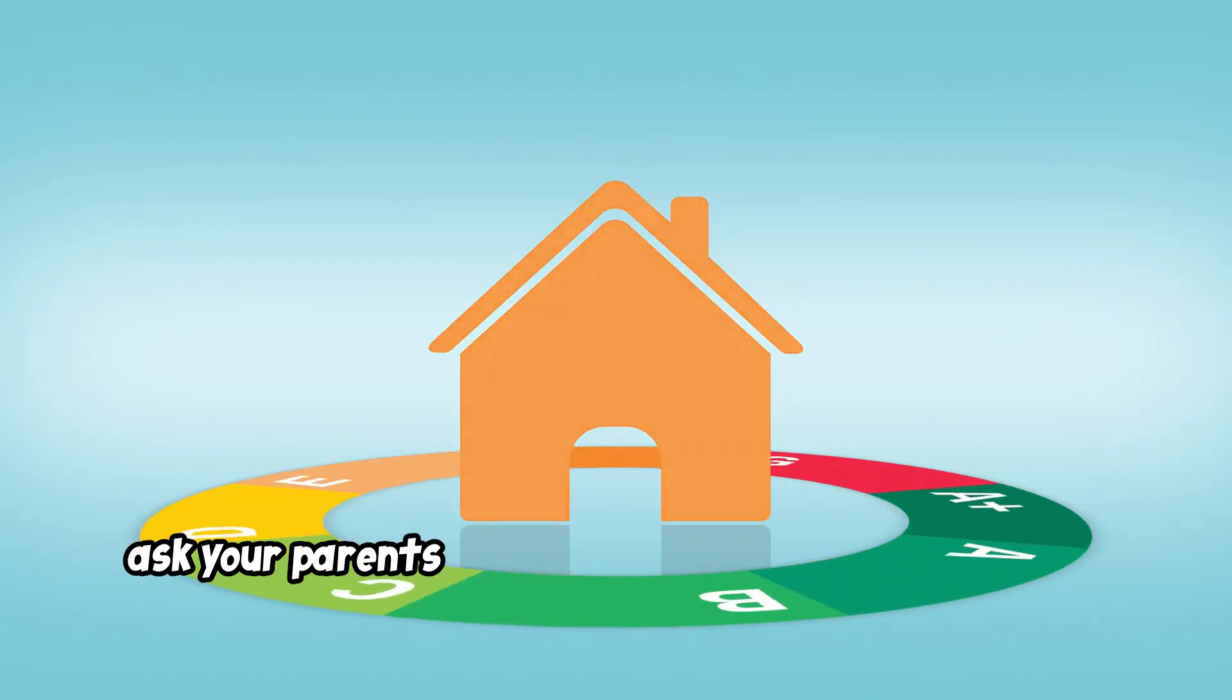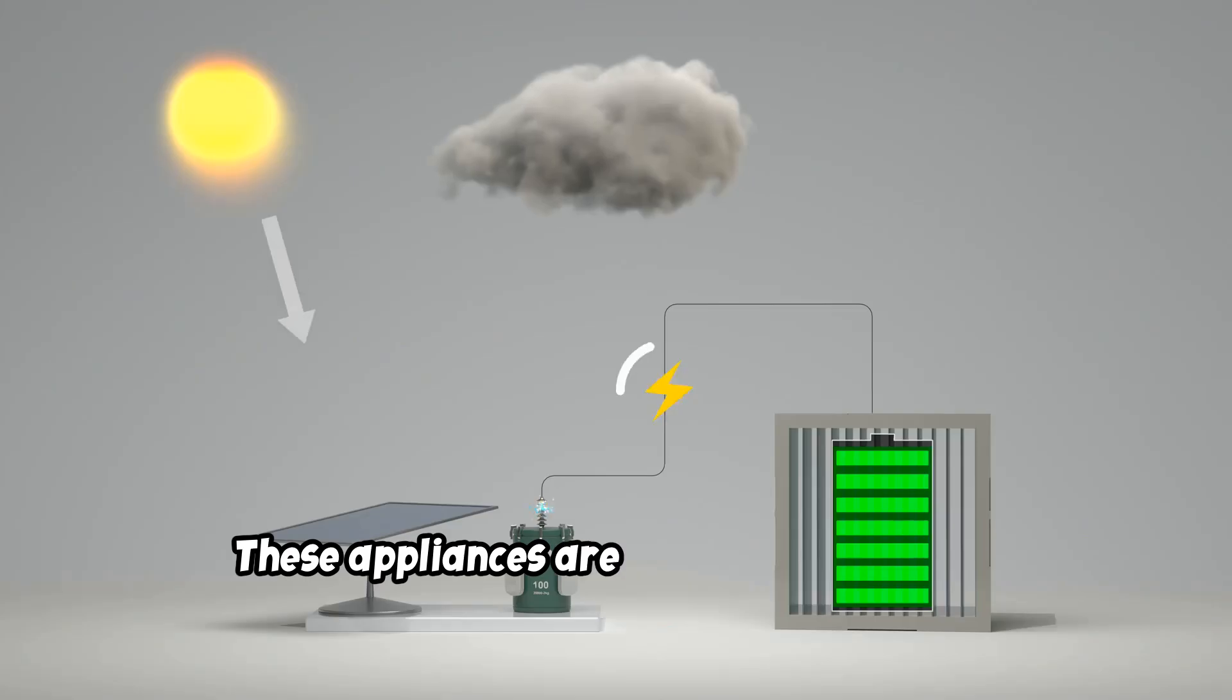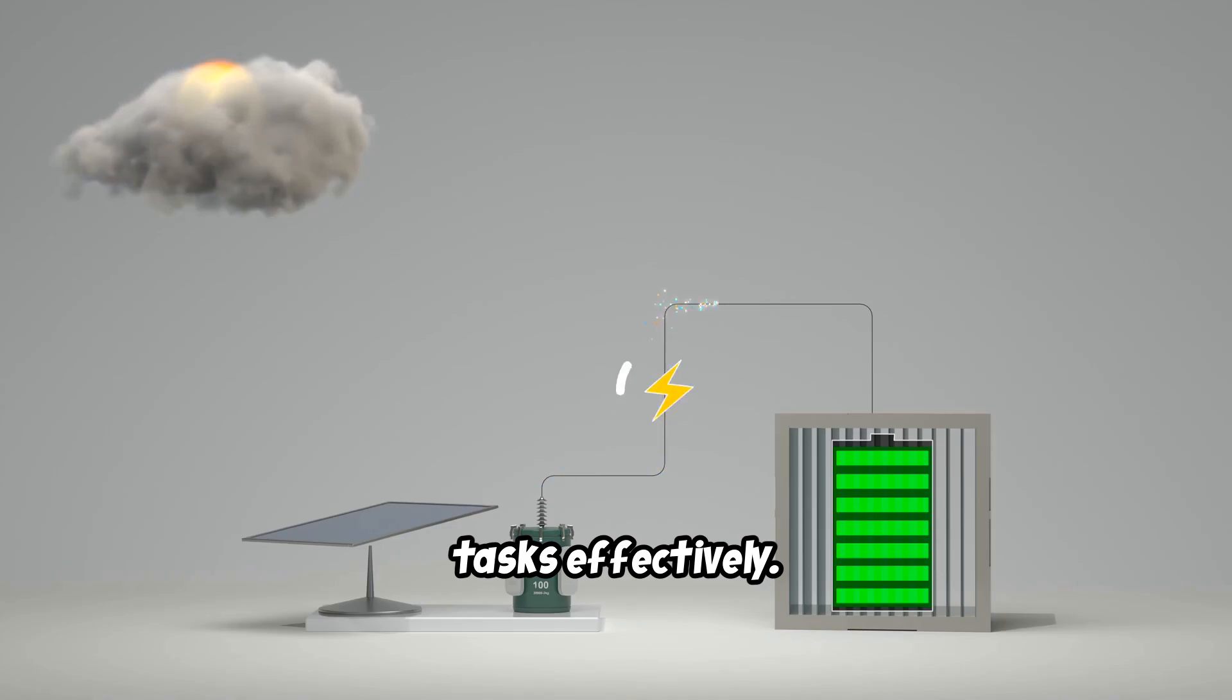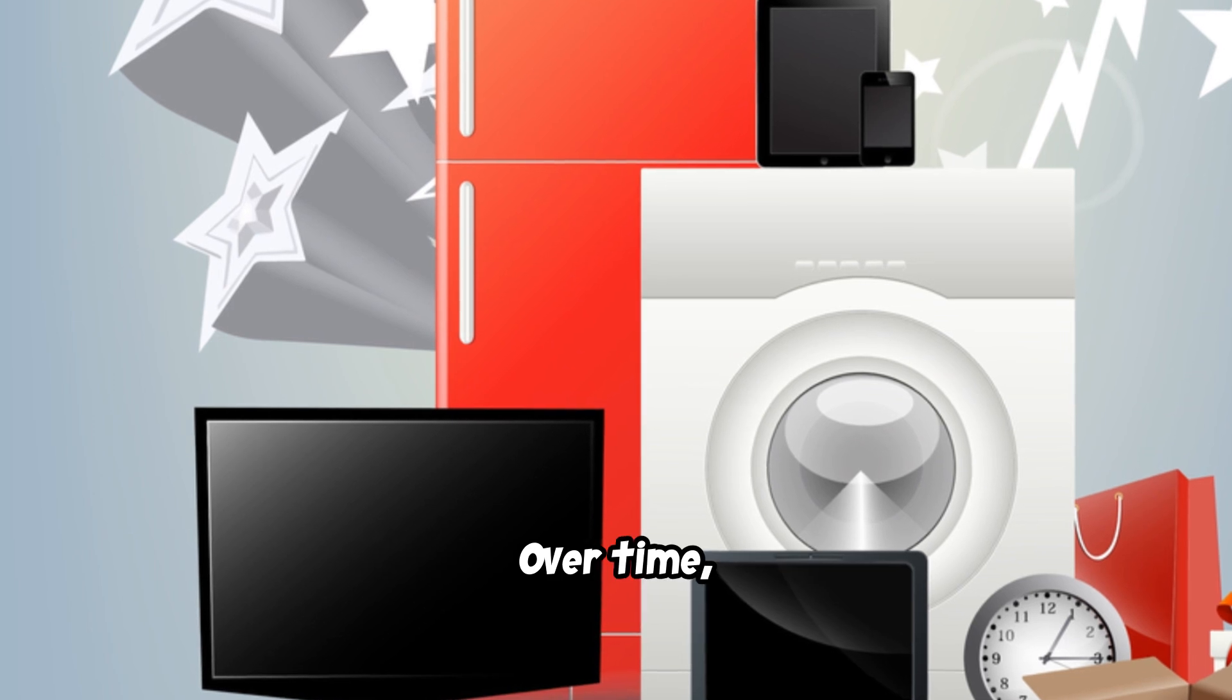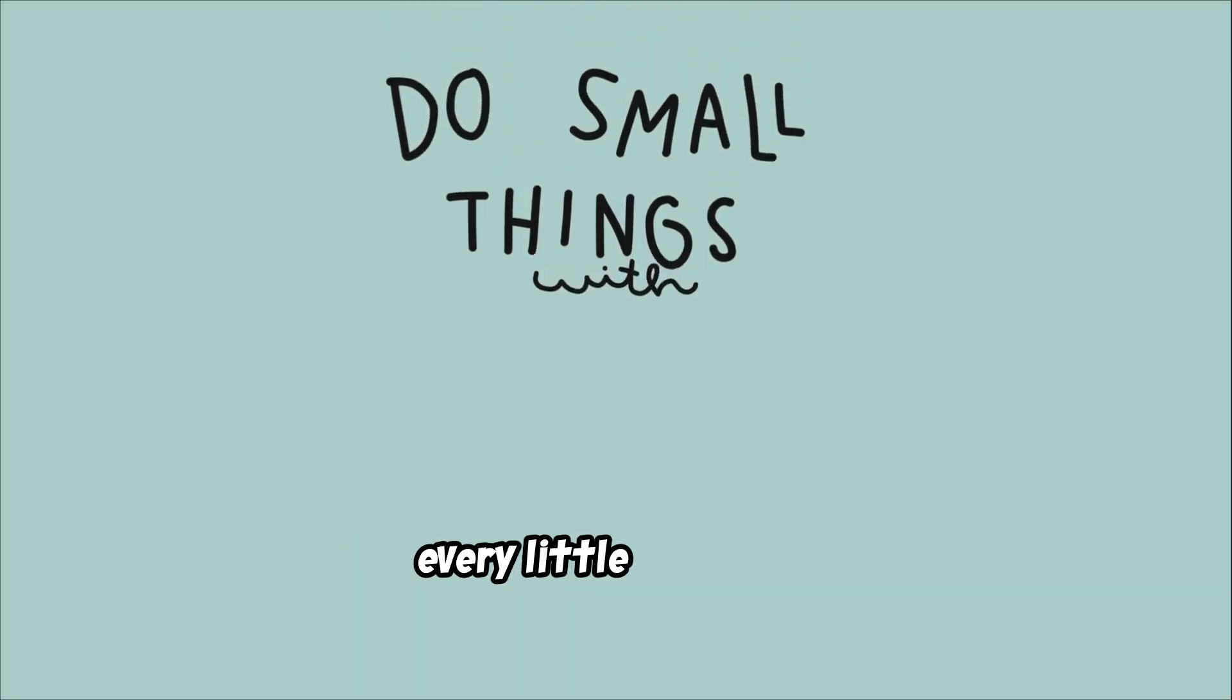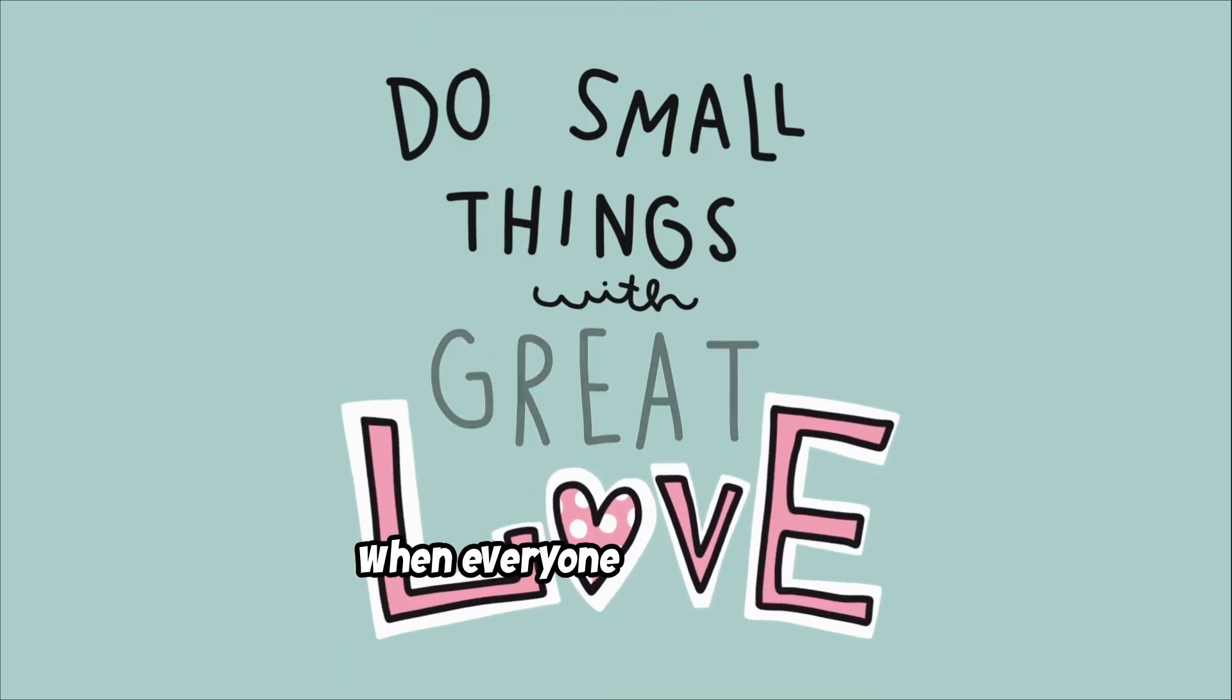Third, ask your parents to buy energy efficient appliances. These appliances are designed to use less electricity while still performing their tasks effectively. These appliances use less electricity which saves energy and money. Over time, the savings can really add up. Remember, every little bit helps. Small actions can lead to big changes when everyone participates.